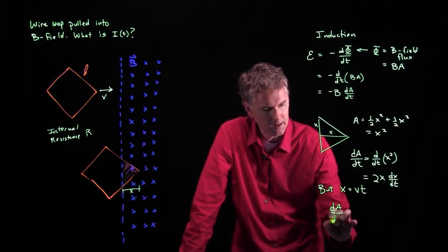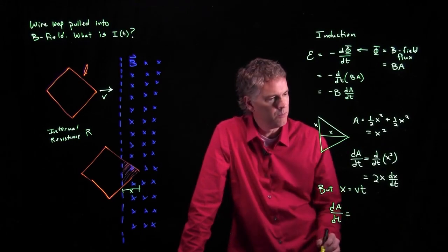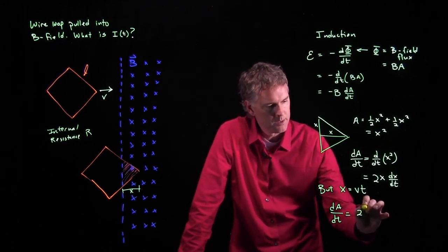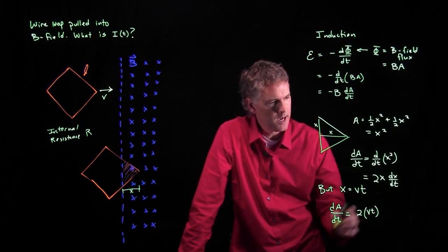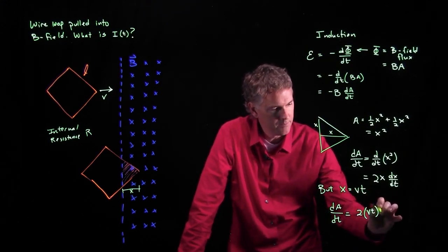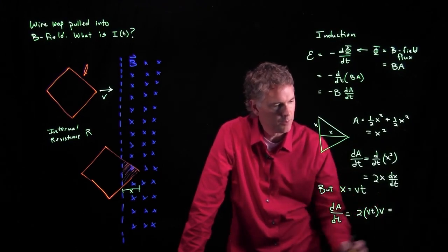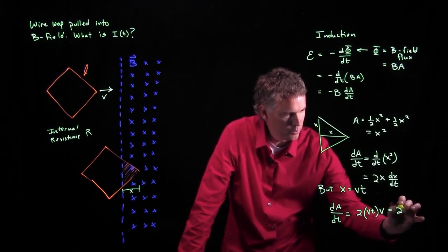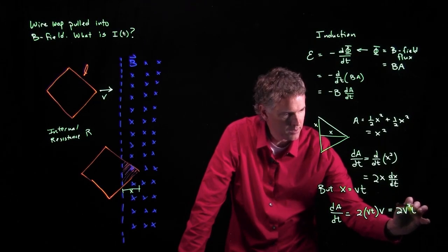dA/dt becomes 2 times X, which we said is Vt, times dx/dt, which is just V. And so what does this thing become? It becomes 2V² times T.